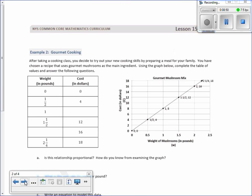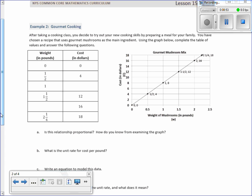Next question, Example 2: Gourmet cooking. After taking a cooking class, you decide to try out your new cooking skills by preparing a meal for your family. You have chosen a recipe that uses gourmet mushrooms as a main ingredient. Using the graph below, complete the table of values and answer the following questions. There isn't anything we can do with zero zero because k could equal anything. I need to pick something other than zero zero and say k equals y over x. I want the equation y equals kx. I'm trying to find k. K equals y divided by x. So k equals four divided by one half. Well, that is the same as saying k equals four times the reciprocal of a half, or two, and that is eight.